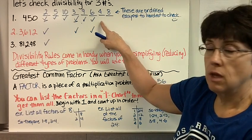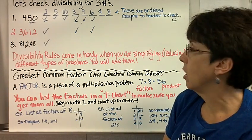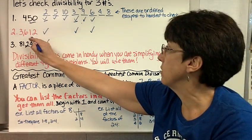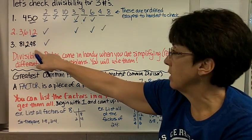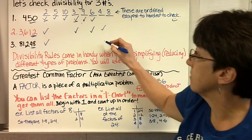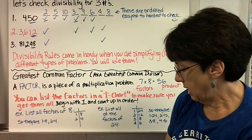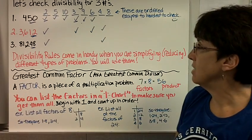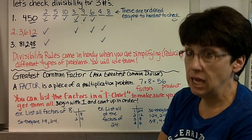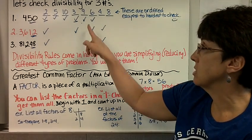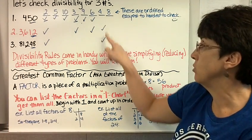Now let's check 4. For 4, we look at the last two digits. Does 4 go evenly into 50? No. Does 4 go evenly into 12? Yes. Does 4 go evenly into 48? Yes. 4 times 12 is 48. Almost done. Last one is 8. So does 8 go into 450? Well, here's another hint. If 4 doesn't go into the number, 8 doesn't go into the number. Just the same as with 3 and 9. So we don't have to check this first number because 4 doesn't go into it. But we do have to check these two.